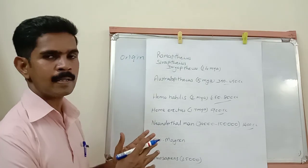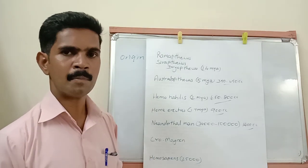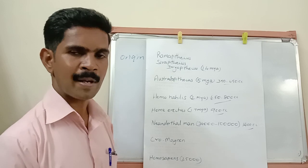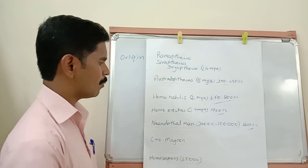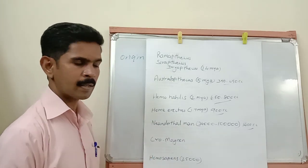The origin and evolution of human beings is a very important topic with many five-mark and one-mark questions. Particularly, the brain capacity of the different human ancestors is very important for one-mark questions.